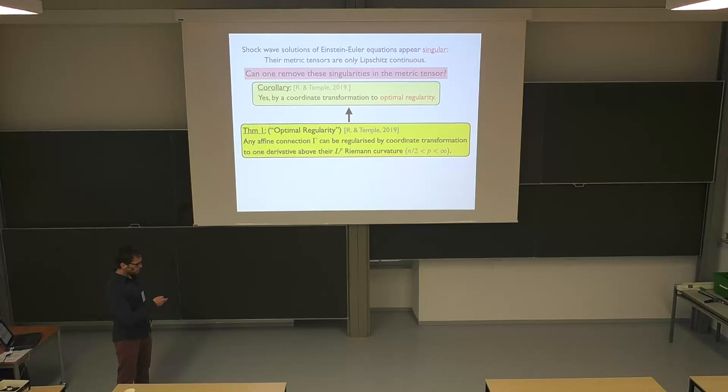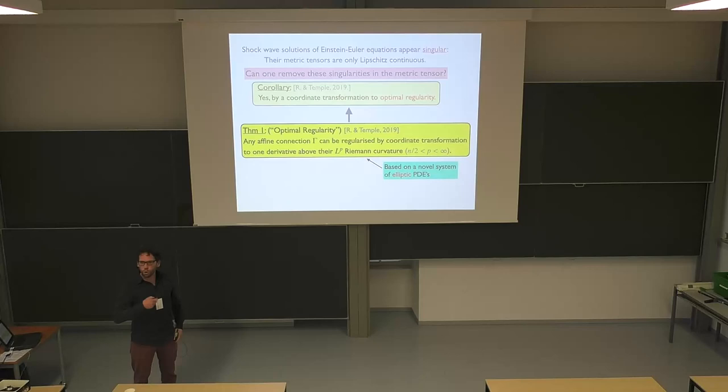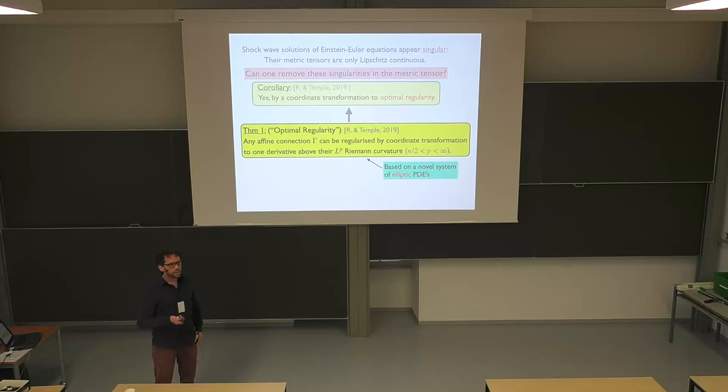The proof is based on a new system of elliptic PDEs that gives you the regularizing coordinate transformation. It's always elliptic regardless of metric signature, so you always have an elliptic system to work with. You get elliptic PDE theory, elliptic estimates, and that gives you this result. That's why we use function spaces tuned to elliptic PDE theory.